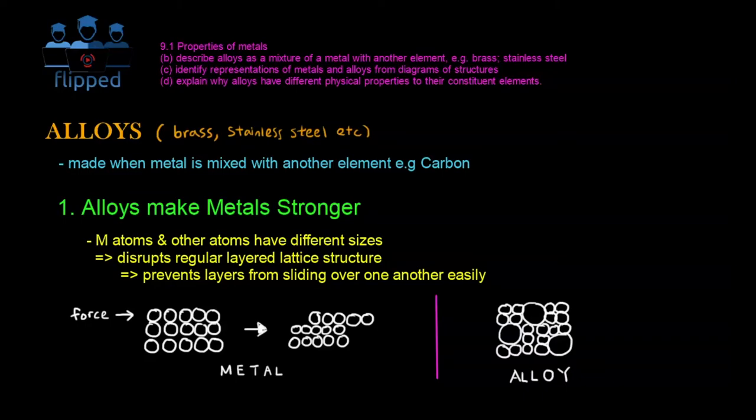Hello, welcome to Flipped. Today we are on alloys, and alloys are really just metals mixed with another element, for example carbon. Some examples of alloys are brass and stainless steel. So alloys make metals stronger.